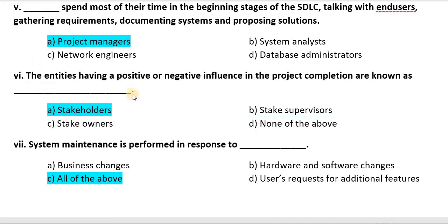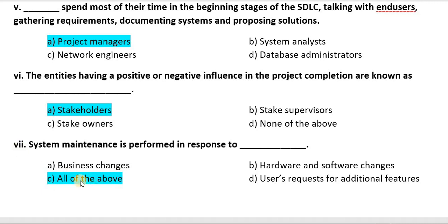Question six: The entities having a positive or negative influence in the project completion are known as — (A) Stakeholders, (B) Stake Supervisors, (C) Stake Owners, or (D) None of the above. Correct option is Option A, that is Stakeholders. Question seven: System Maintenance is performed in response to blank — (A) Business Changes, (B) Hardware and Software Changes, (C) All of the above, or (D) User requirements for additional features. Correct option is Option C, that is All of the above. And that's it for the MCQs.